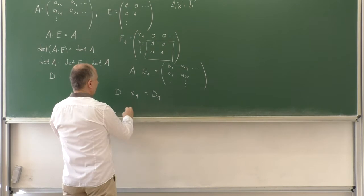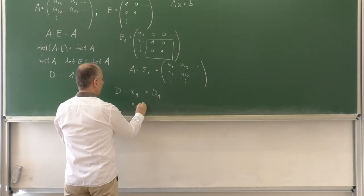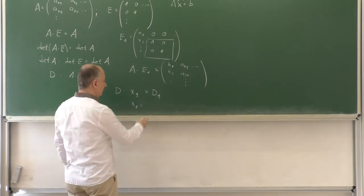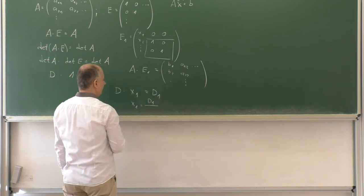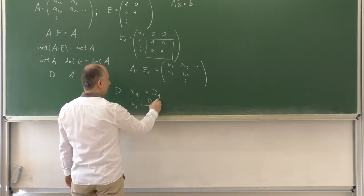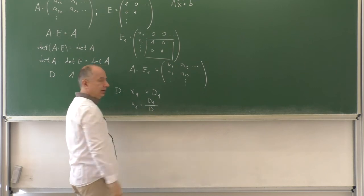And if D is different from 0, we have the useful result that the first unknown X1 is the ratio of D1 divided by D.